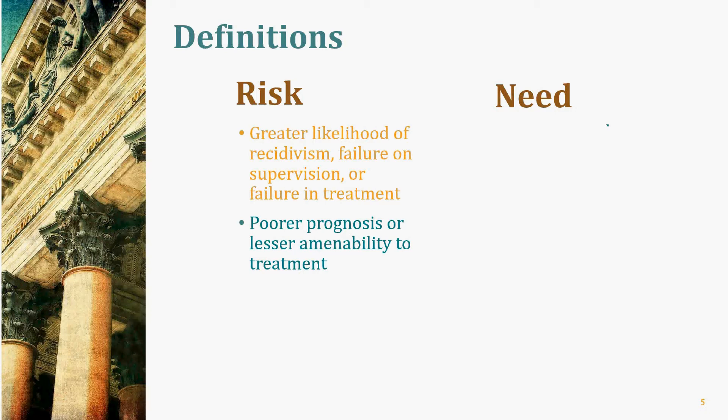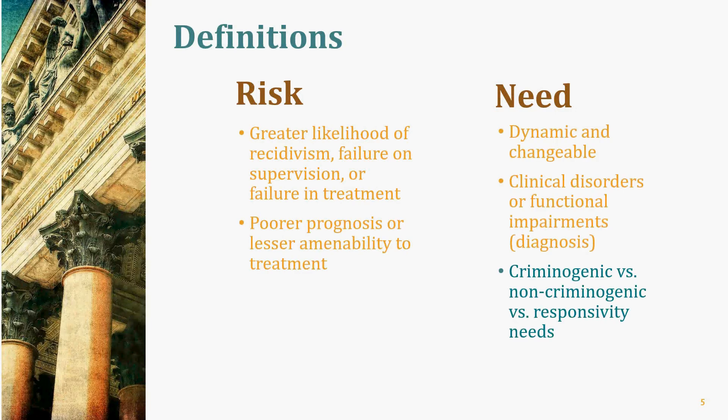If the person is too depressed, experiencing traumatic stress, or psychotic, it's hard to do other interventions. So we treat responsivity needs first. The general rule is: treat responsivity needs like severe mental illness — stabilize it immediately, then focus on criminogenic needs, which often include addiction. Only after stabilizing responsivity and criminogenic needs would you turn attention to non-criminogenic needs like poor employment, poor education, and poor parenting skills.